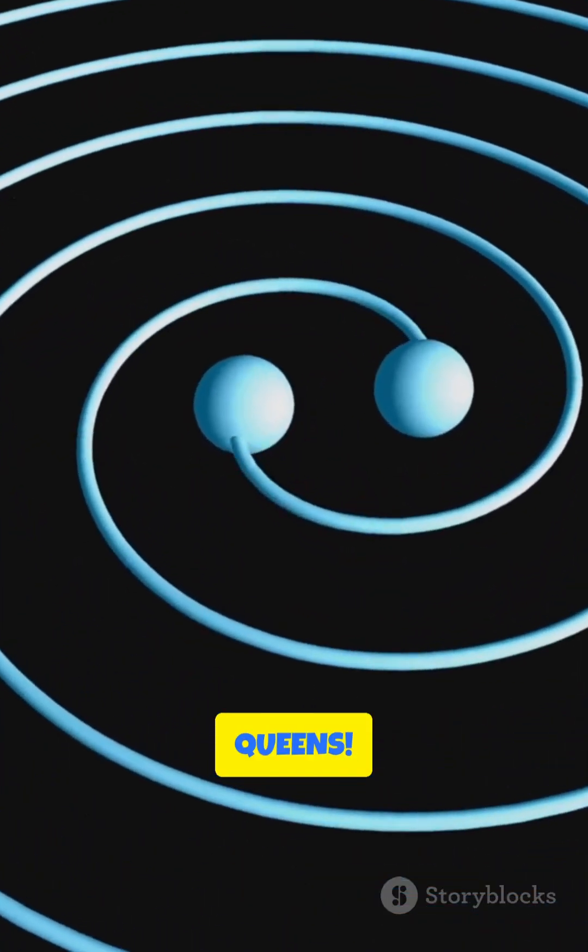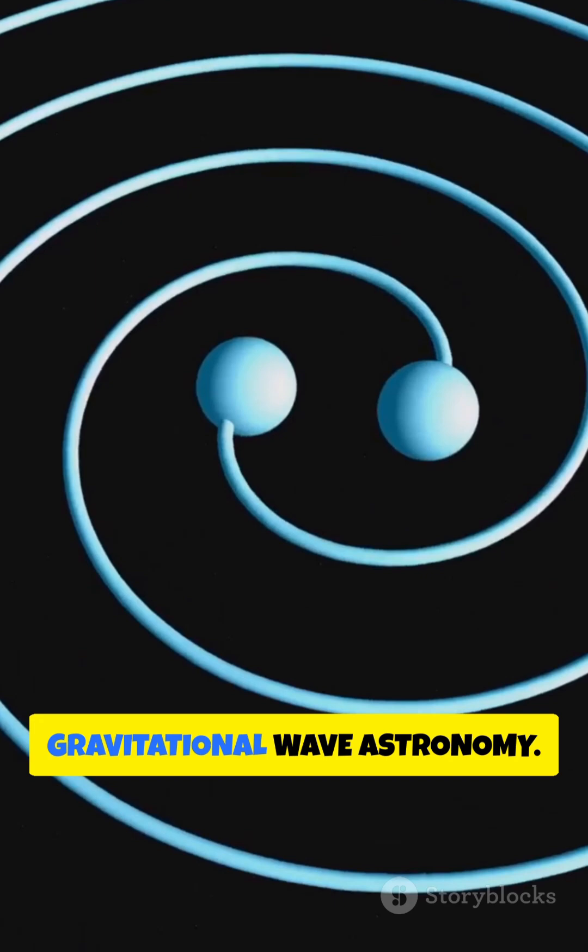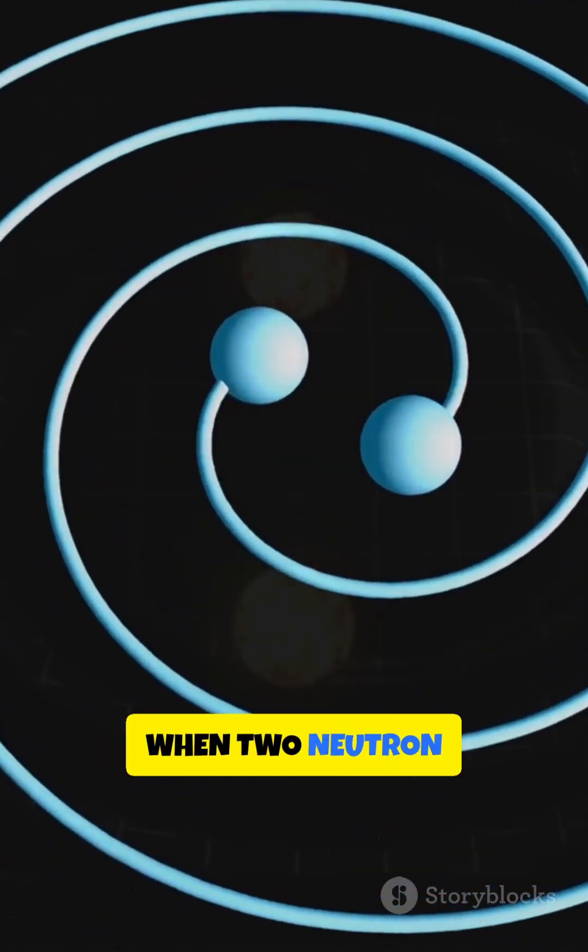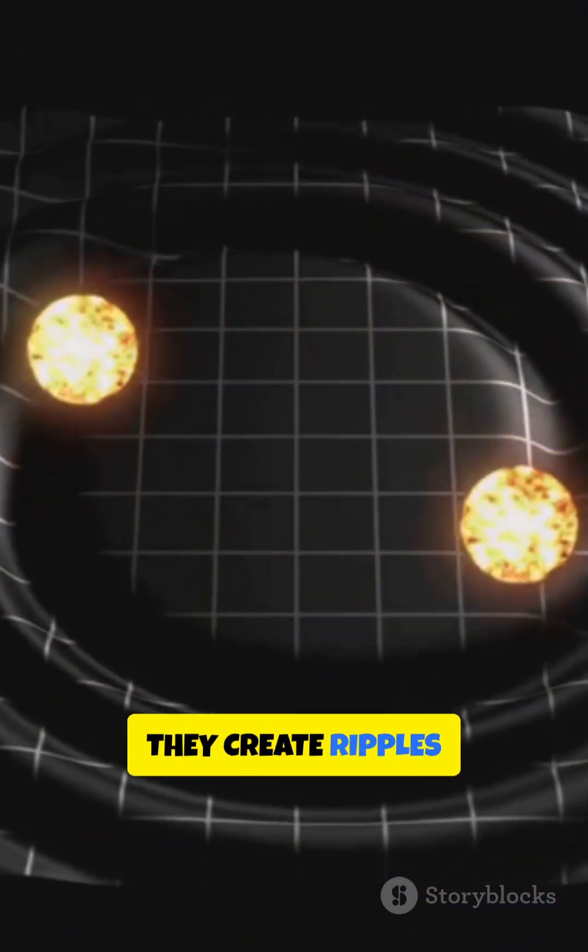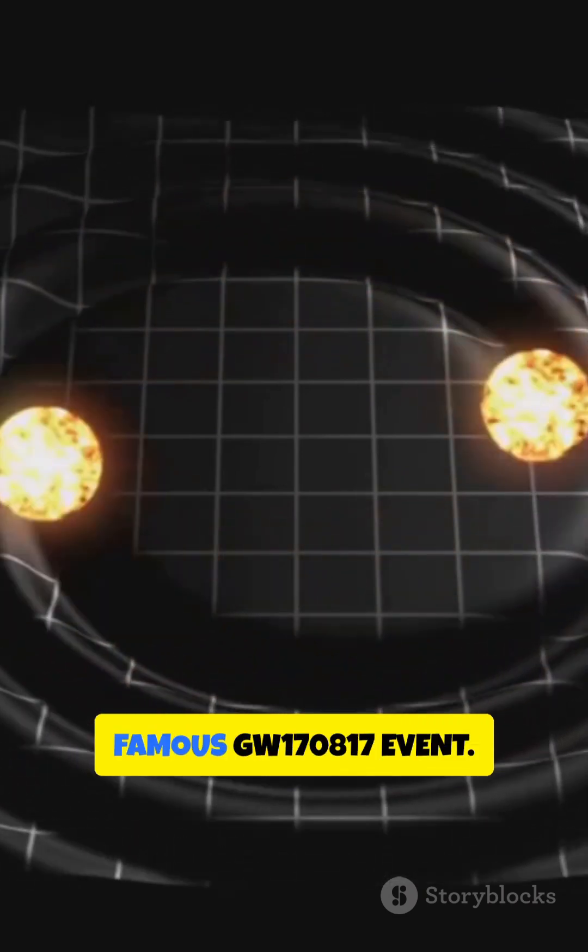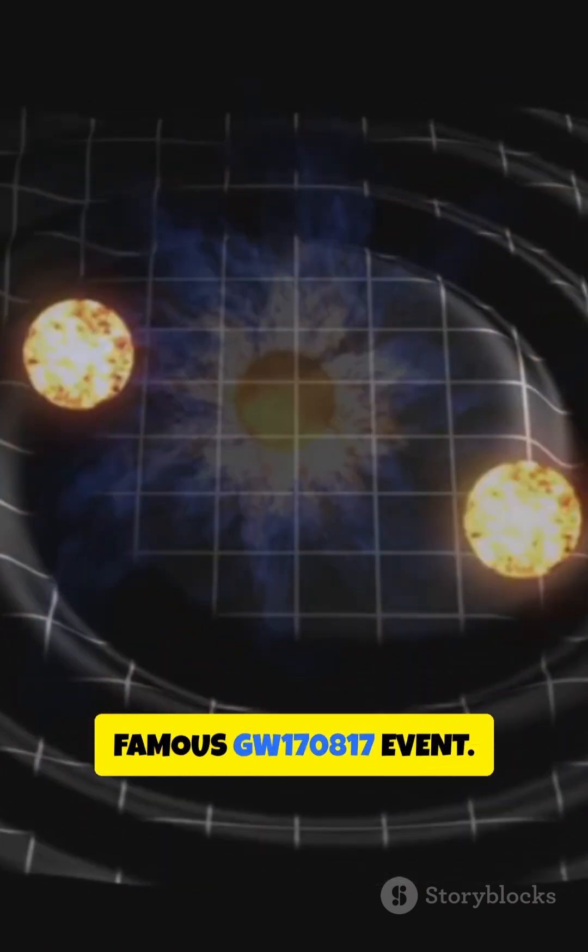Talk about stellar drama queens. Neutron stars are also key players in gravitational wave astronomy. When two neutron stars collide, they create ripples in space-time that we can detect here on Earth, like the famous GW170817 event.